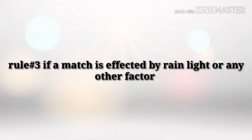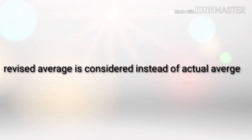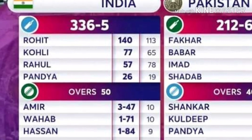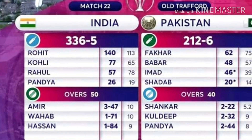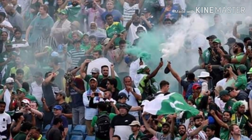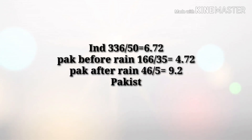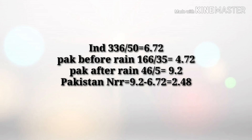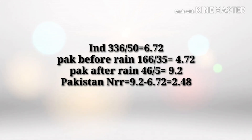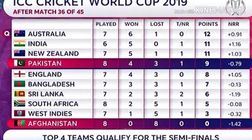In the third type of match, if a match is affected by rain, light, or any other factor, the DLS (Duckworth-Lewis) method is applied and the adjusted average per over is considered instead of actual overs. In the 2019 World Cup, India scored 336 runs in 50 overs, giving an average of 6.72. Pakistan were 166 for 6 in 35 overs when rain came. After resumption, Pakistan were given a revised target of 136 runs in 5 overs. Pakistan scored 46 runs in those 5 overs, and because of the DLS method, Pakistan's average score was 9.2.